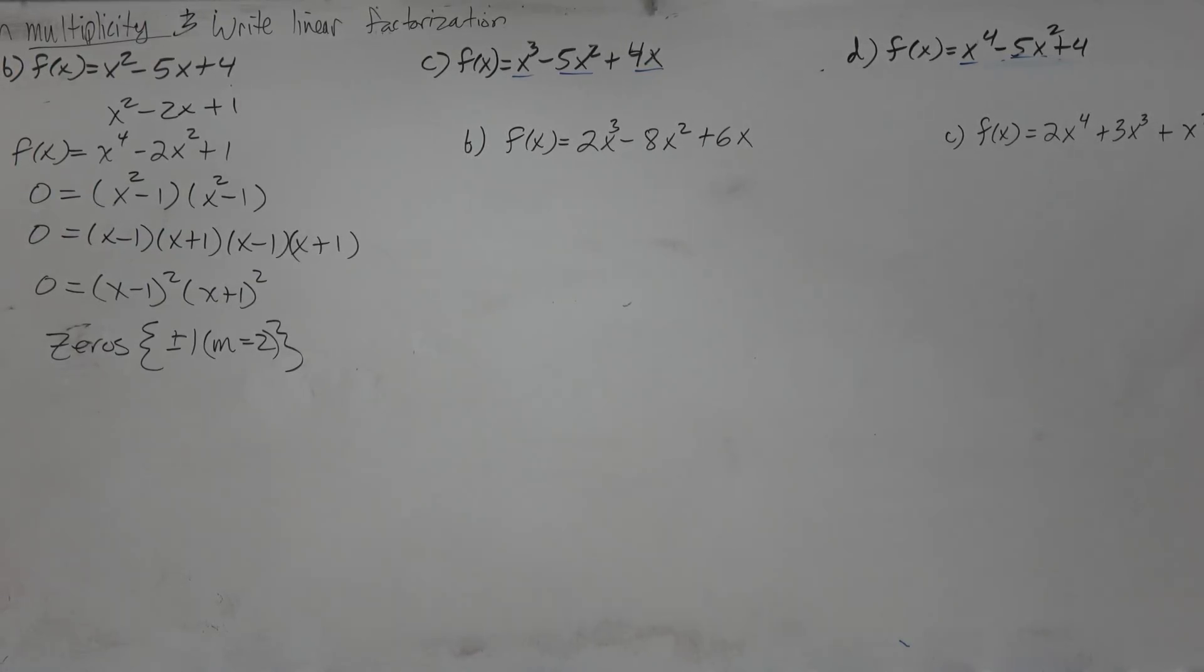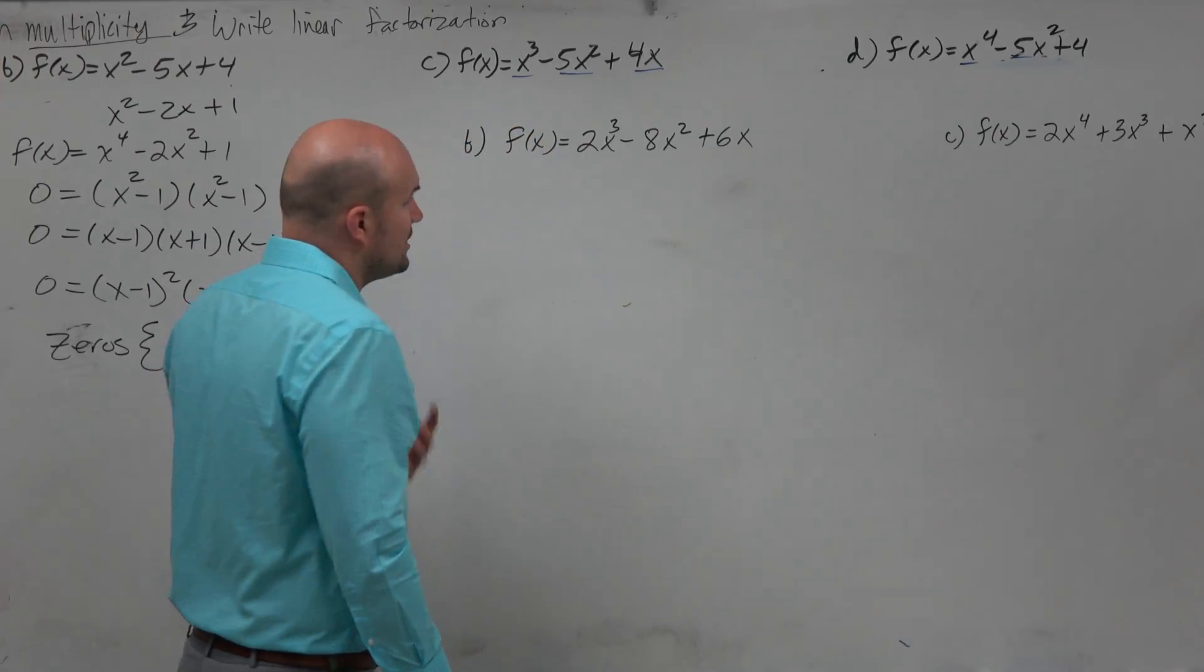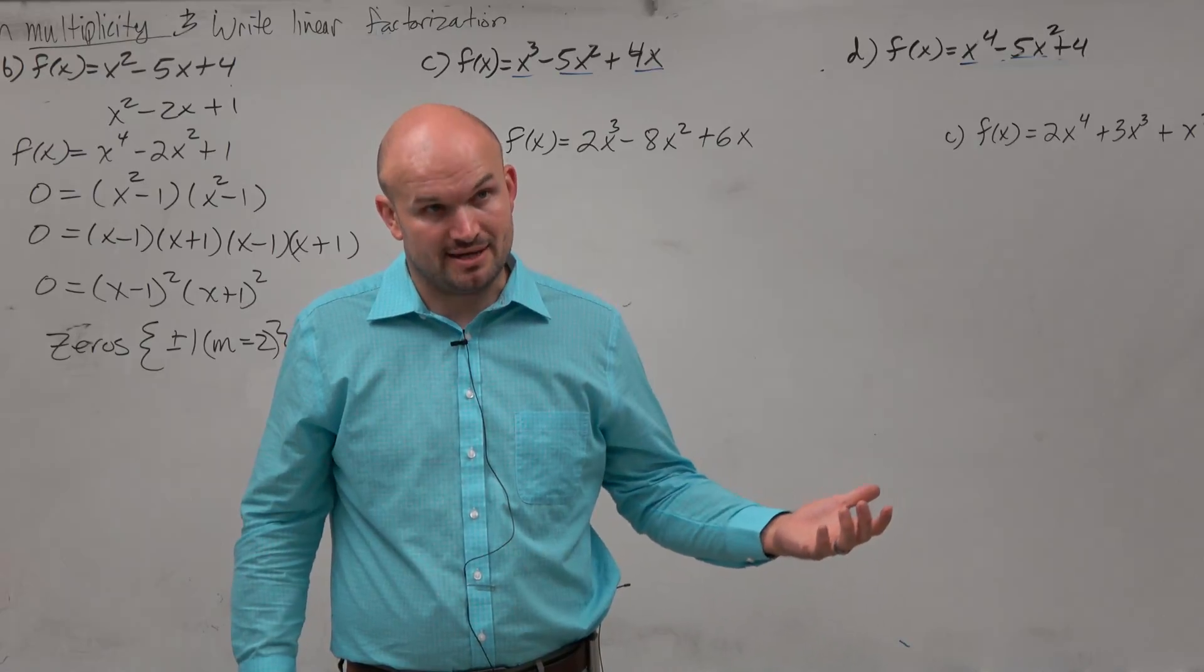Do you have to write the multiplicity equals 2 and 5? I mean, as long as I can tell what the multiplicity of each zero is, if I ask for multiplicity, then you need to provide that.